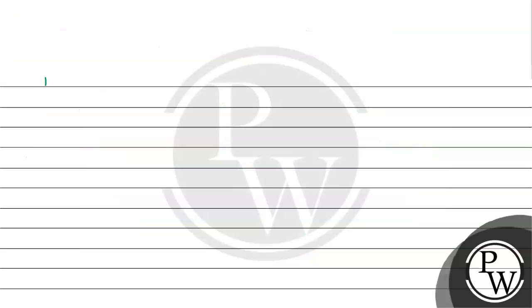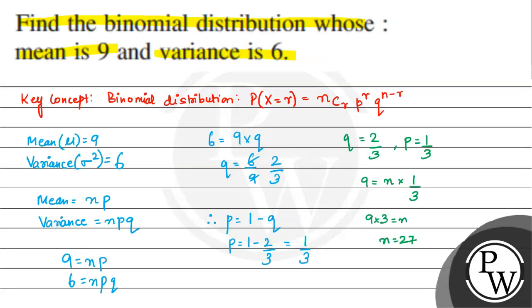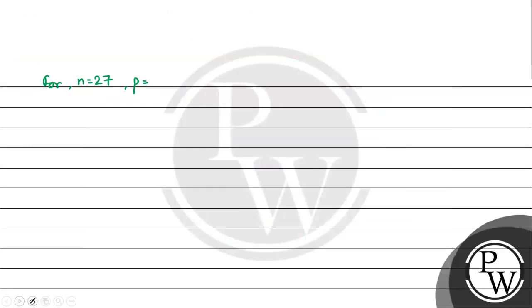Mera n ho gaya bachcho, 27. For n is equal to 27, p mera kitna aya bachcho? p a gaya mera 1 by 3 or q a gaya 2 by 3. So mera binomial distribution hoga.